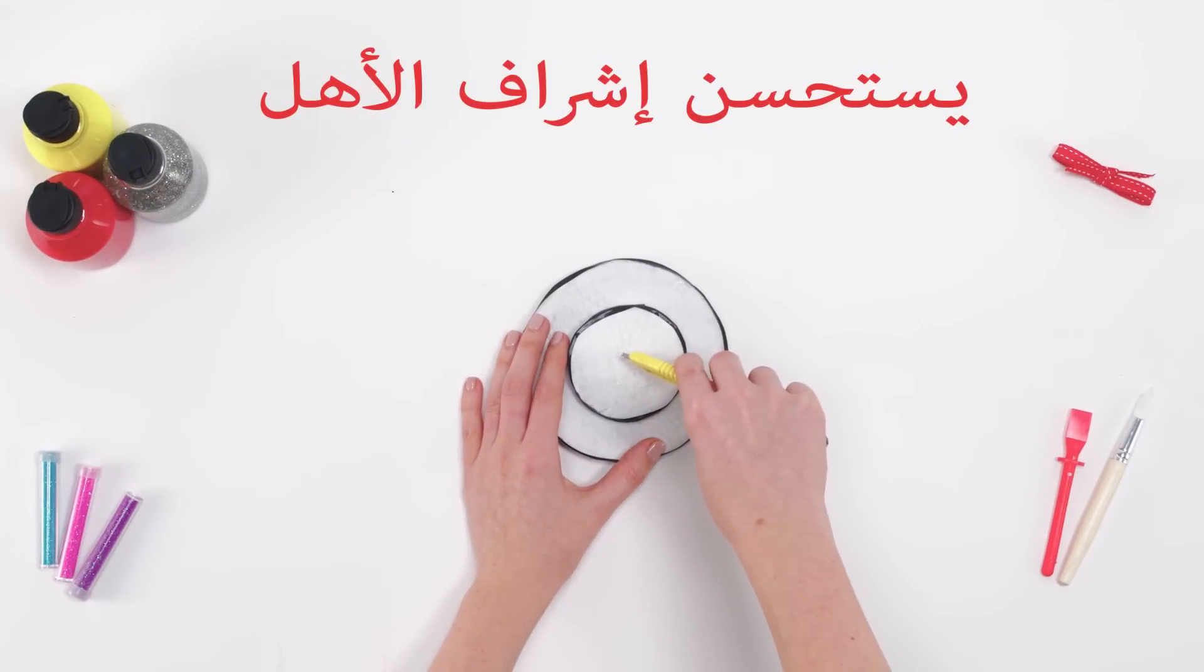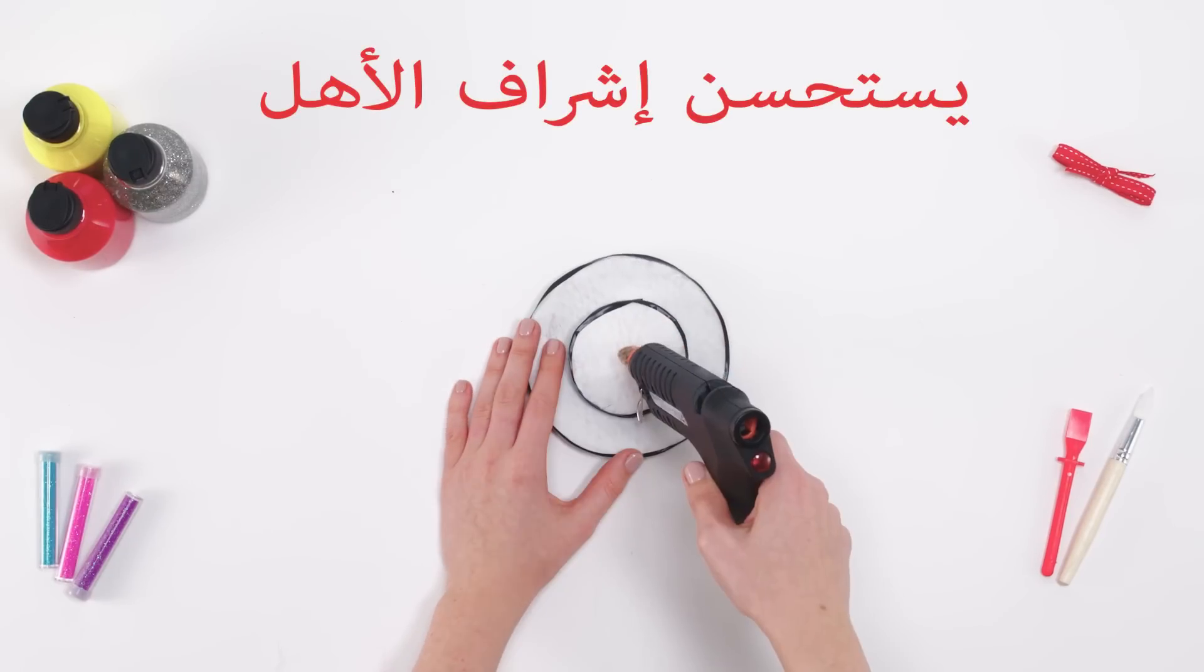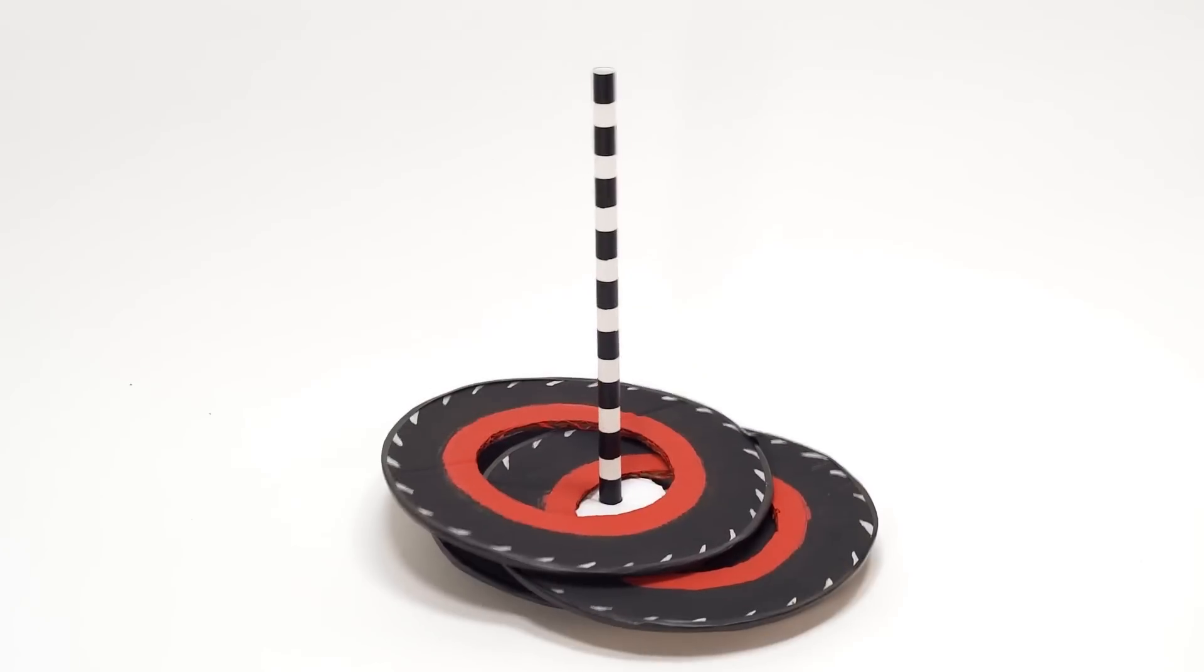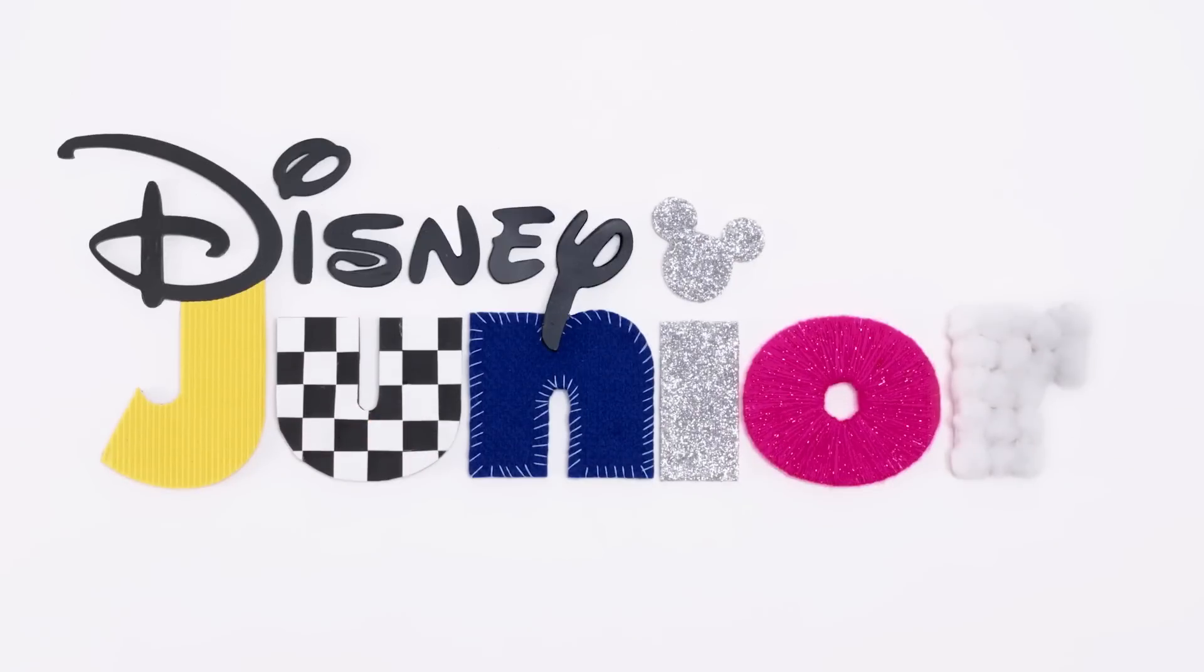Carefully use a craft knife to pierce a hole in the center of the base, then use the glue gun to stick the tube to it. And that's how you make your very own Mickey Tire Toss game!